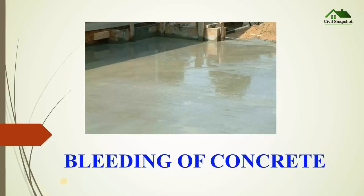Bleeding can be defined as the tendency of water to rise to the surface of freshly placed concrete. It is another form of segregation where some amount of water comes to the concrete surface after placing and compacting, before setting. The water content carries some particles of sand and cementing materials. Sometimes bleeding helps to reduce the plastic shrinkage cracks in concrete.